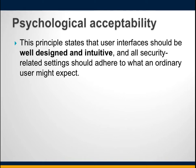Psychological acceptability implies that security mechanisms should not interfere unduly with users' work, while meeting the needs of authorized users. If security mechanisms hinder usability, users may opt to turn them off. Where possible, security mechanisms should be transparent or introduce minimal obstruction. Additionally, security procedures must reflect the user's mental model of protection — if they don't make sense to the user, errors are likely.